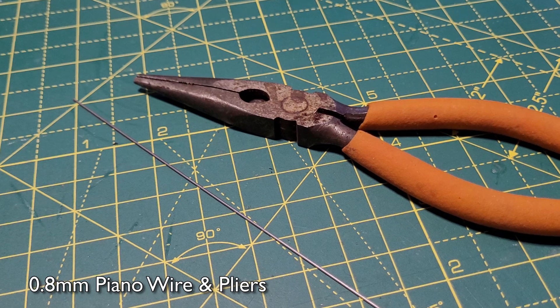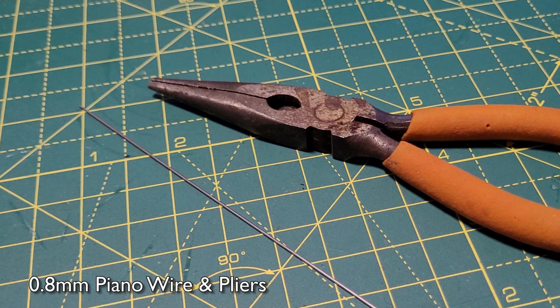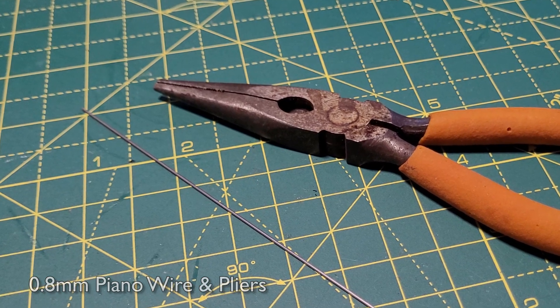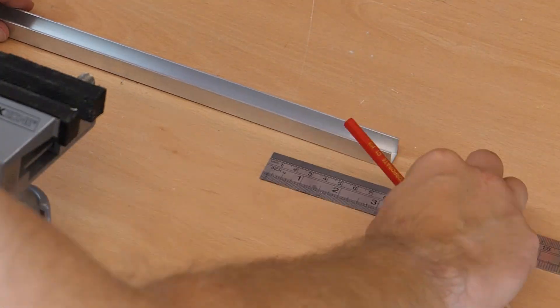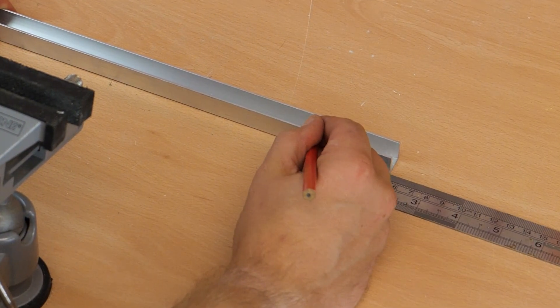Finally you'll need some stiff wire such as piano wire which will pass through the hole on the point tie bar and move it from side to side. You'll also need a pair of pliers to bend it. So let's start turning this aluminium into a servo mount. Step one is to measure out a 5 centimeter length of the aluminium.